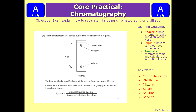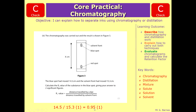Question 3: the chromatography was carried out and the result was shown in figure 3. The blue spot had moved 14.5 centimetres and the solvent front had moved 15.3 centimetres. Calculate the RF — the retention factor — value for the substance in the blue spot, giving your answer to two significant figures. Because the retention factor is always between 0 and 1, two significant figures here is two decimal places. So you take the distance travelled by the dye, 14.5 cm, divided by the distance travelled by the solvent front, 15.3 cm. You get one mark for dividing them and one mark for getting 0.95 to two significant figures.